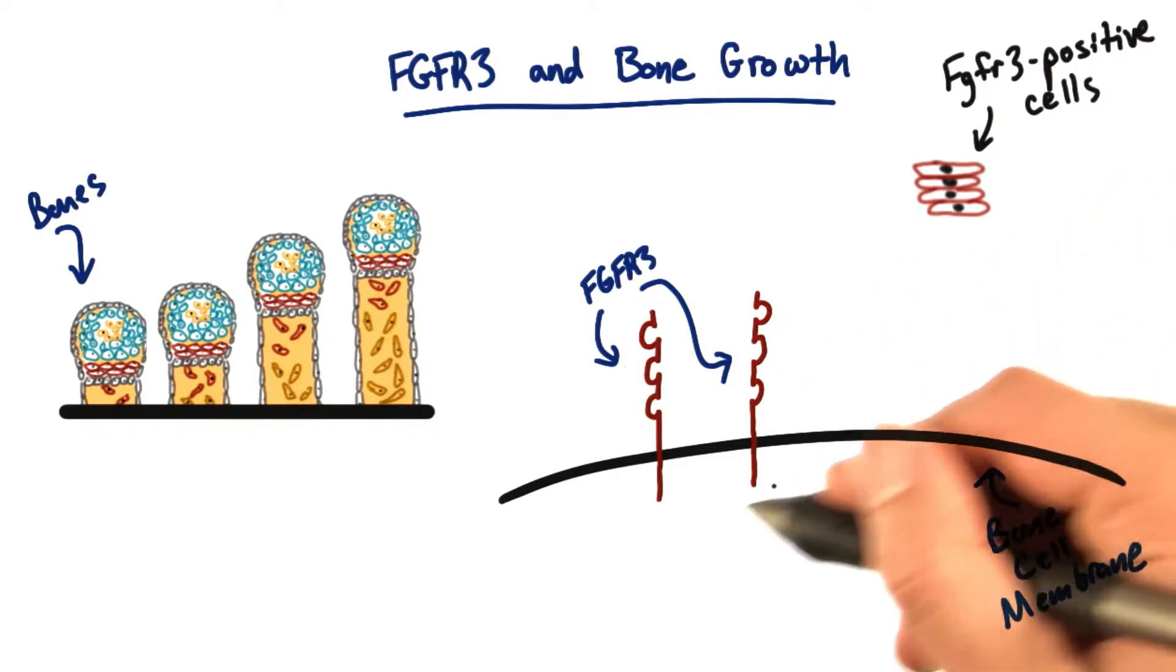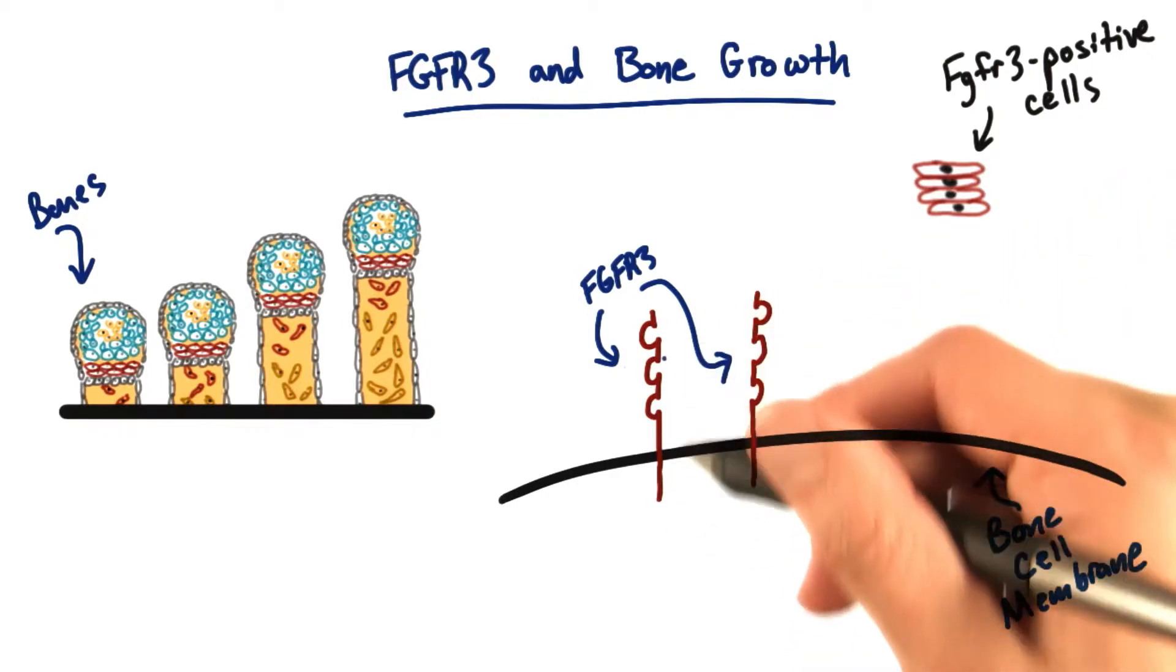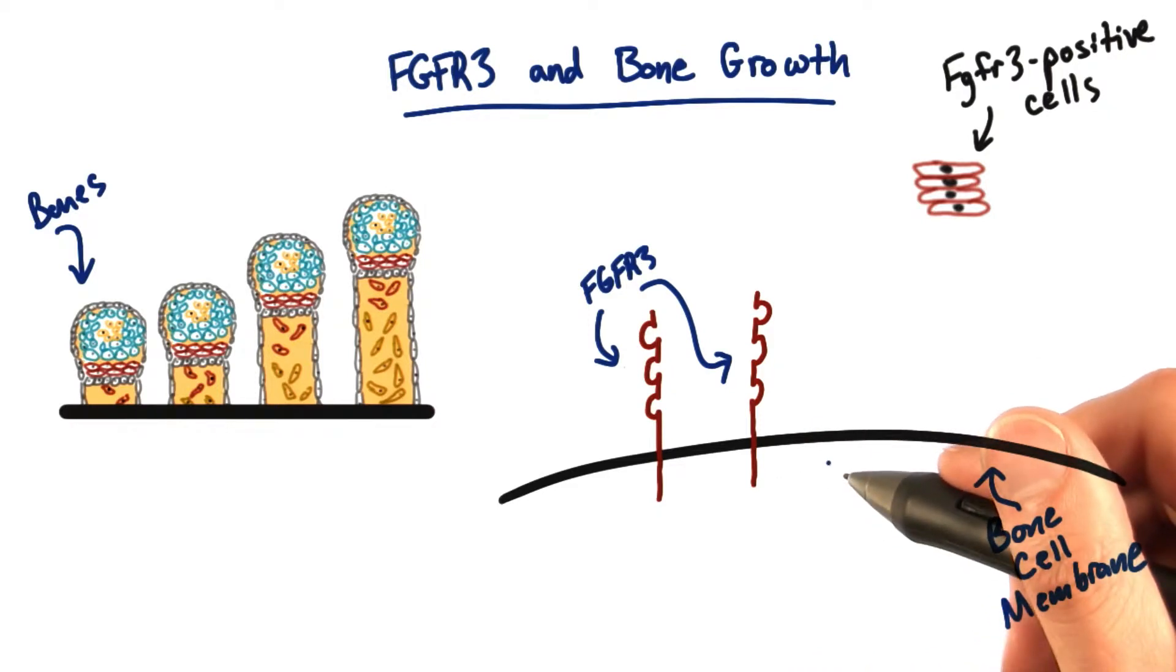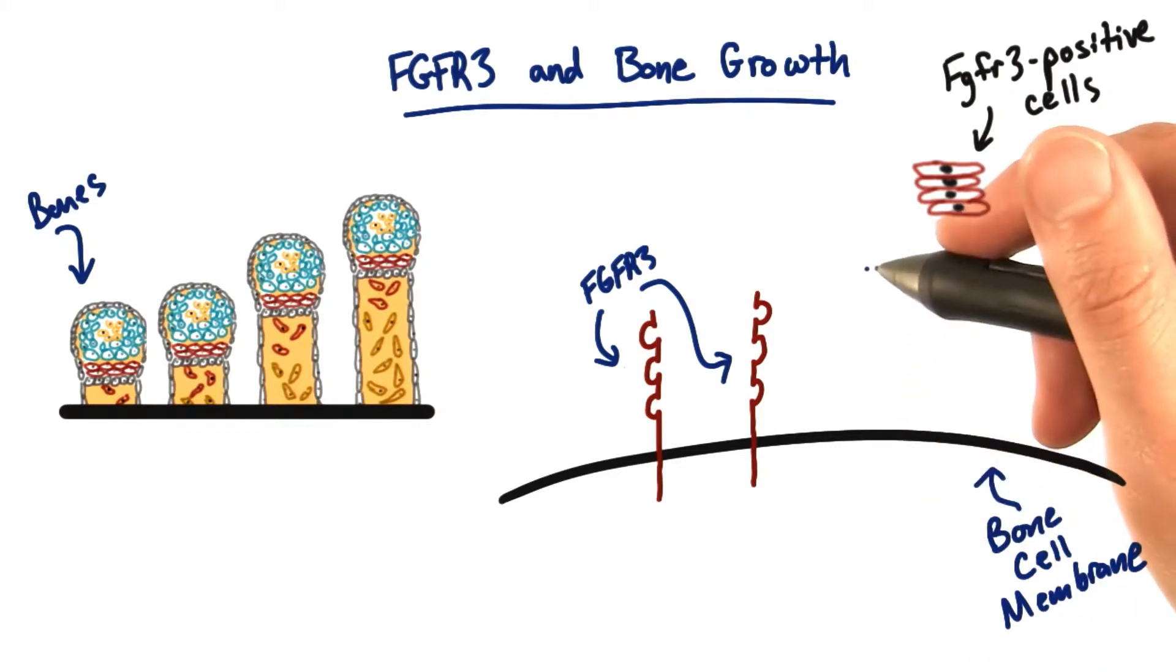This red protein here is the FGFR3 protein. We have two proteins right here, embedded in the membrane. Proteins in the membrane are important because they communicate from the outside world to the inside world.